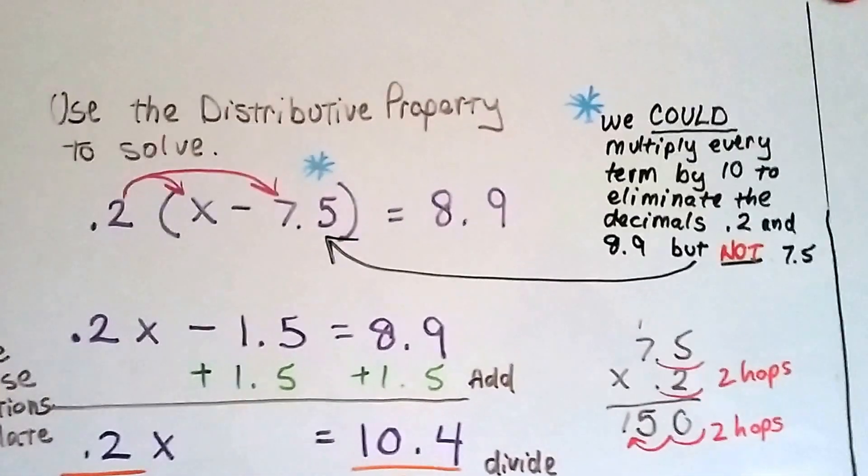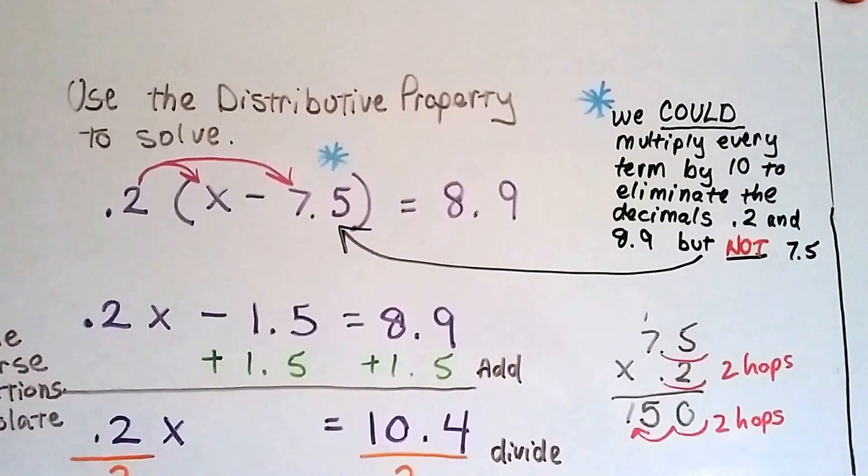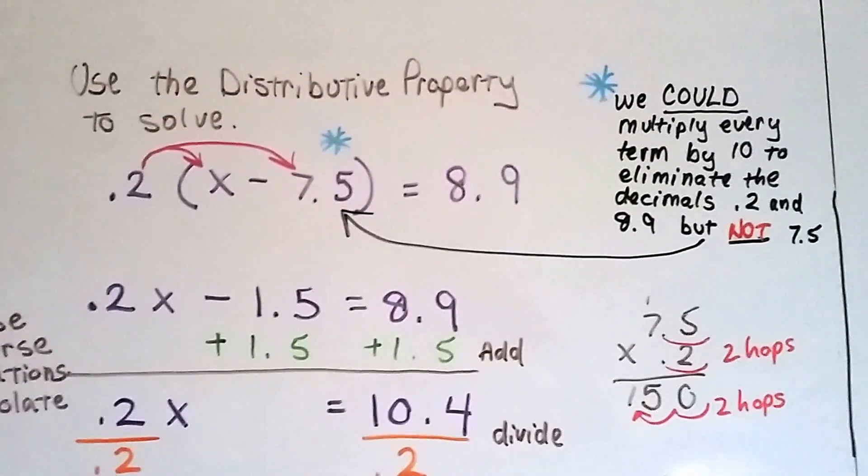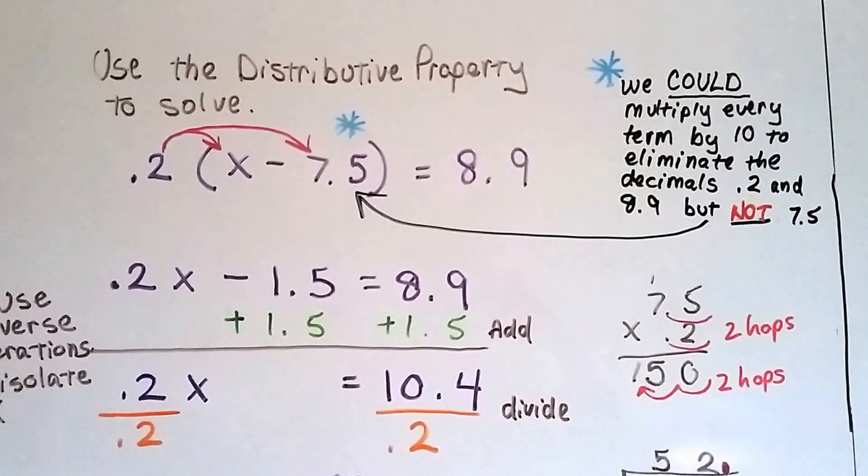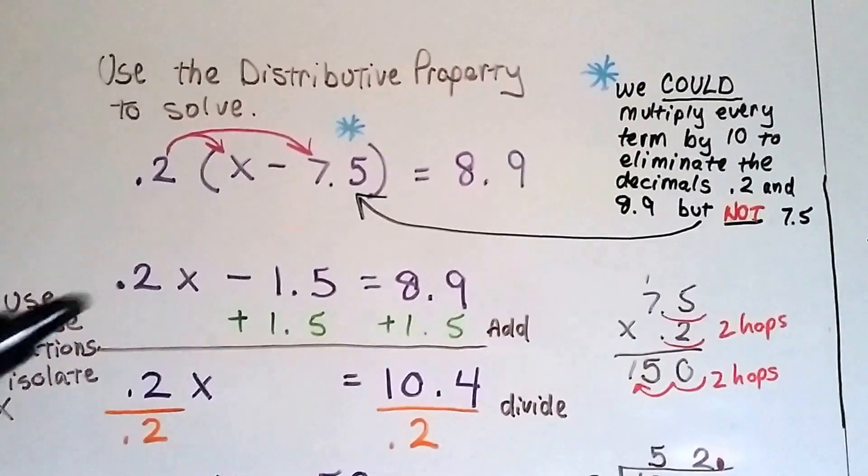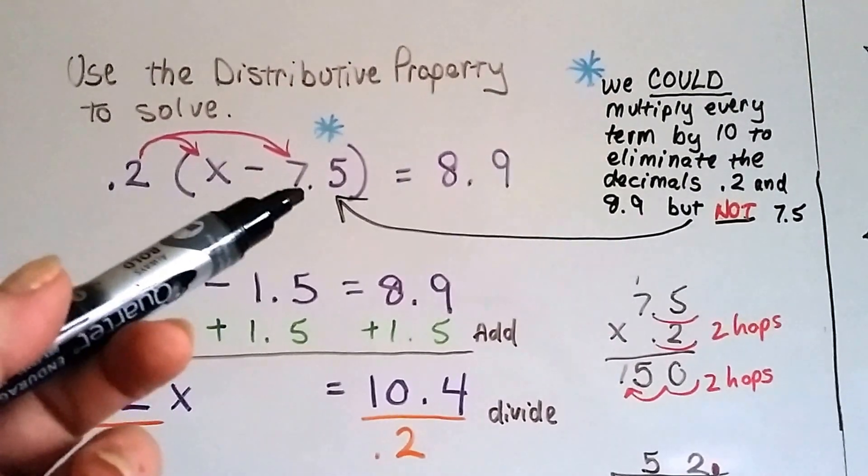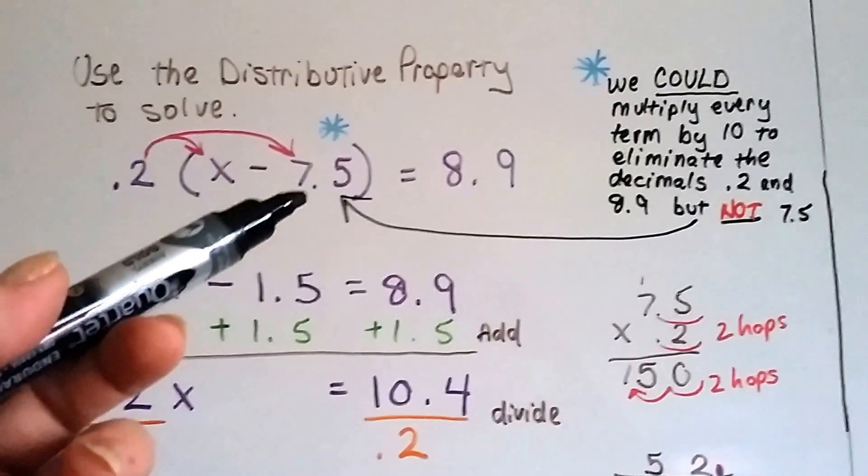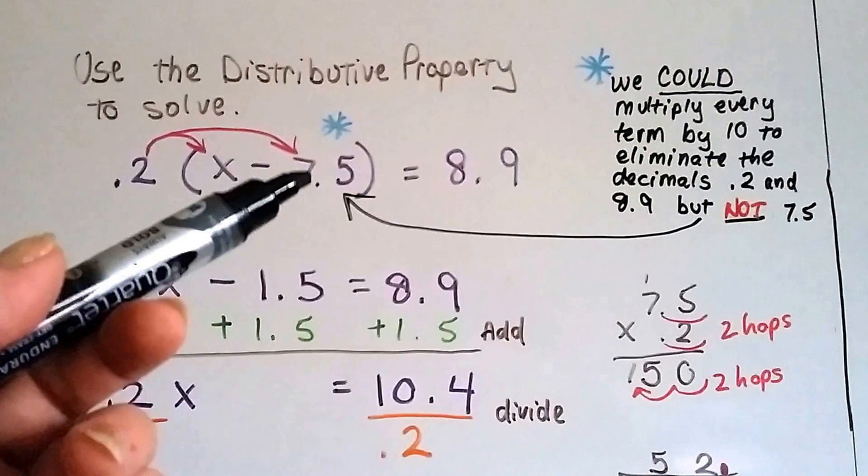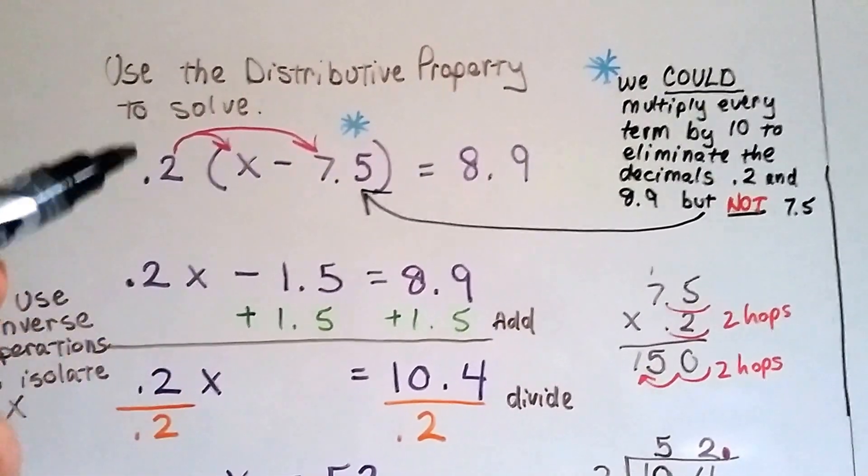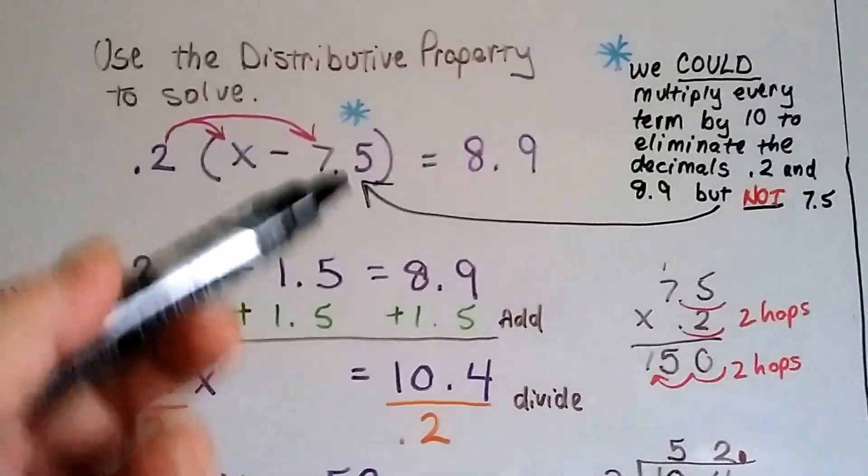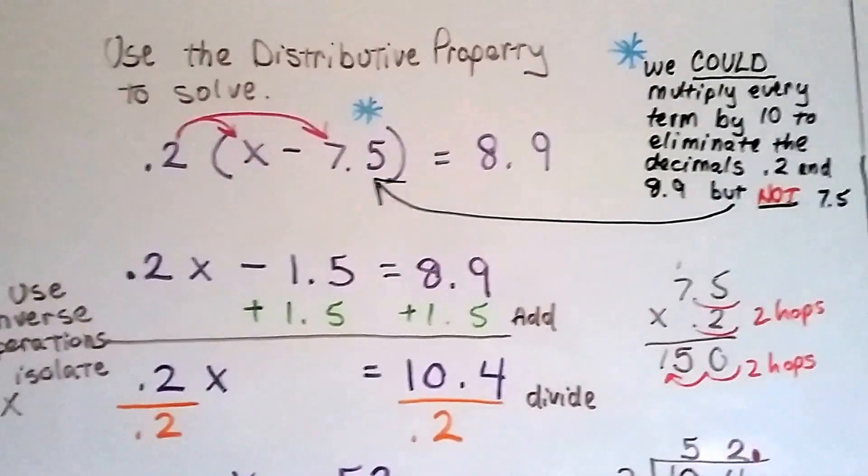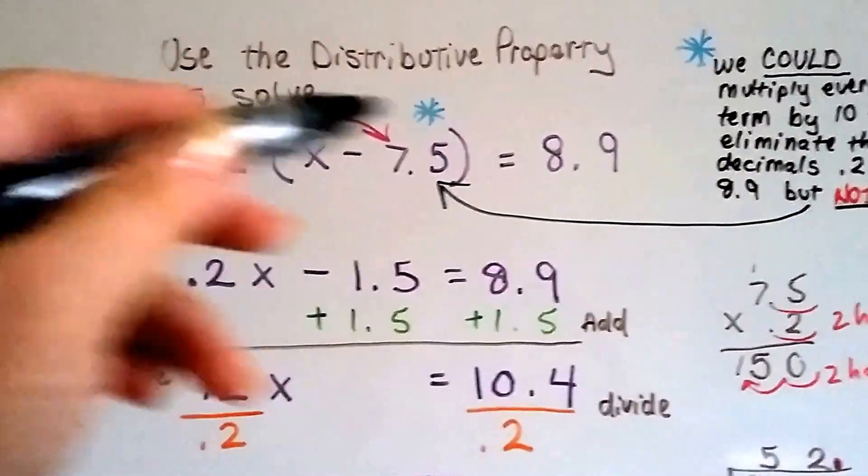Now, before we discussed multiplying by powers of 10 to get rid of decimals. And we could do that, and I'll show you at the end of the video, but it won't affect this guy because he's inside parentheses. He's still going to be 7.5 because that would be multiplied by 10 and that would be multiplied by 10 and he'd stay the same. So we're just going to do this as decimals.